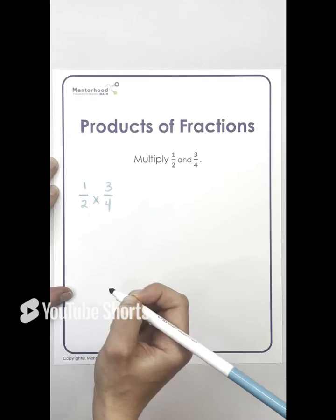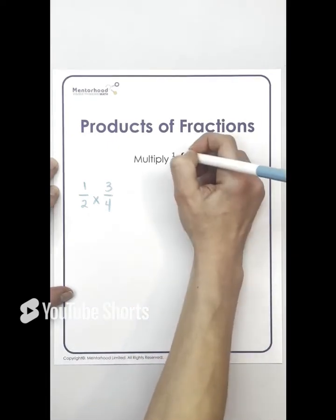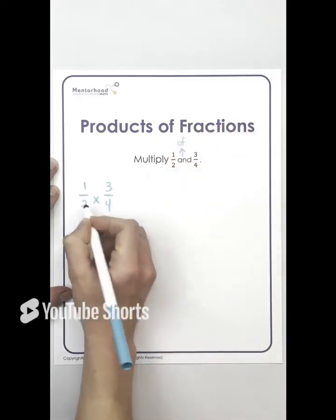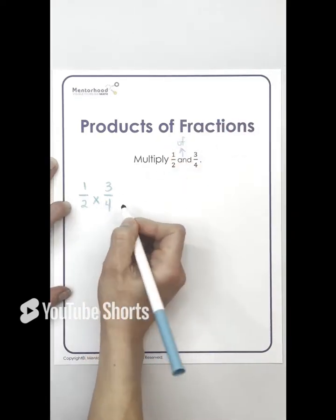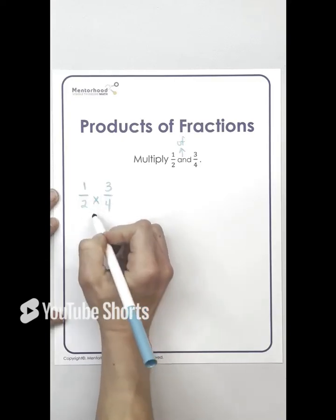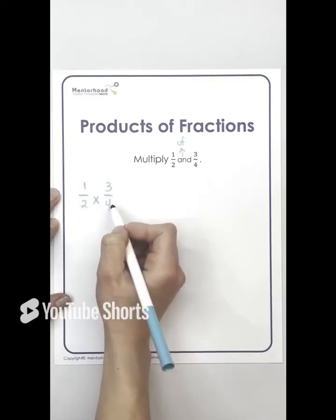Now, whenever you're multiplying fractions, you can also see this as one half of three quarters. So this is one half of three quarters. And because multiplication works backwards and forwards, this is also three quarters of one half. So that is what the multiplication means.